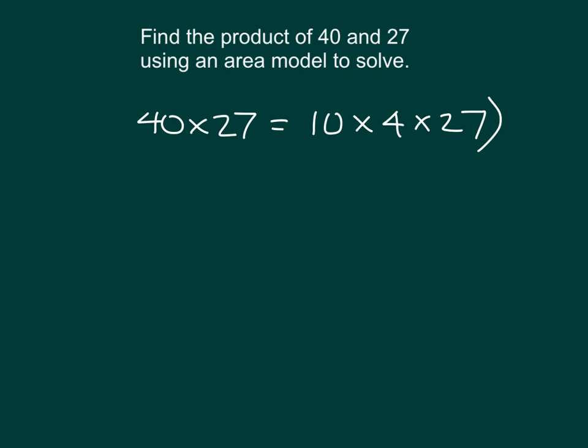We can go ahead and think about this as 10 times 4 times 27. And if I place some parentheses, we can start thinking about 4 times 27 first using an area model. How do we show 4 times 27 with an area model? The width would be 4, and then we would be looking at 27 where we would break it apart into its tens.